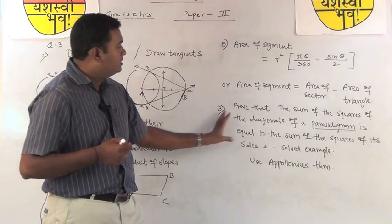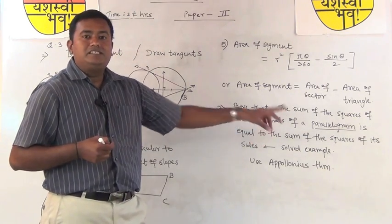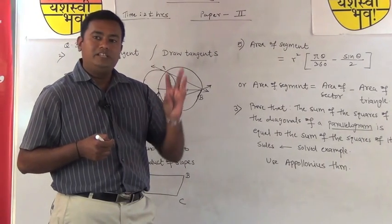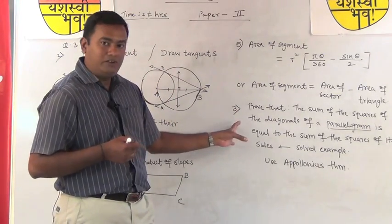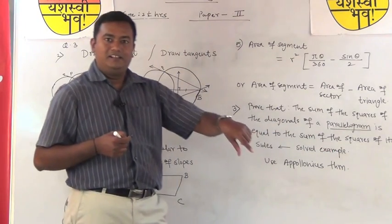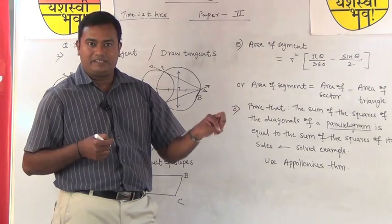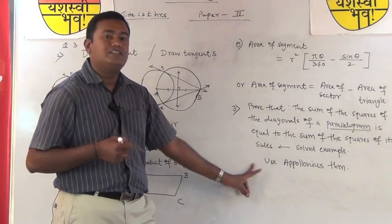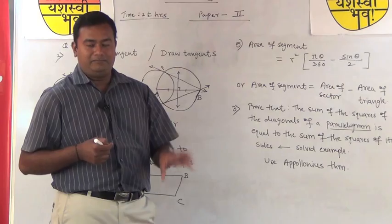Question number 3 in Q5 asks: prove that the sum of the squares of the diagonals of a parallelogram equals the sum of the squares of its sides. This is a solved example from the first chapter on similarity — do not neglect solved examples, as they are very much part of the syllabus. Note: the exercise has a similar question but for a rhombus. For a rhombus use Pythagoras theorem; for a parallelogram use Apollonius theorem, because the diagonals of a parallelogram bisect each other but are not perpendicular bisectors.